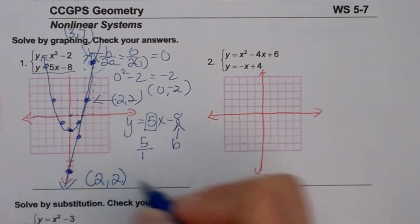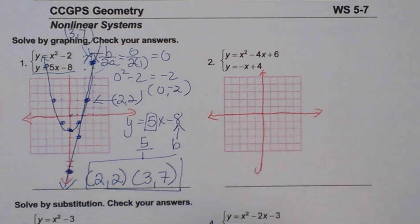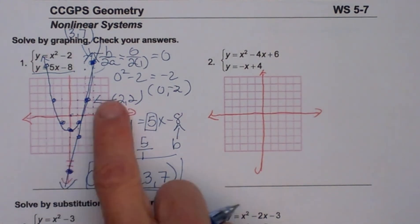So 2, 2 is one of my intersection points, and 3, 7 is my other intersection point, and that is how you solve it by graphing. So there you go. You get an example of how to solve a quadratic and the linear system by graphing.